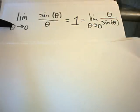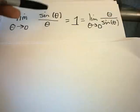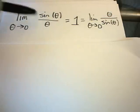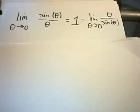And again, if you try the plug-and-chug method, if you plug in theta equals 0, you'll get sine of 0, which is 0, and 0 on the bottom. So you get 0 over 0.